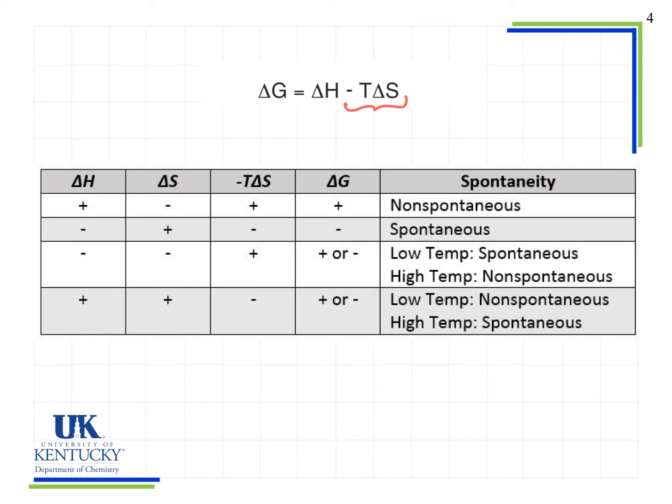So when I look at when delta H is negative, I see that and delta S is negative, I see my minus T delta S term is positive. So it will depend on whether the delta H term is bigger or the T delta S term is bigger to determine whether delta G is negative or positive.